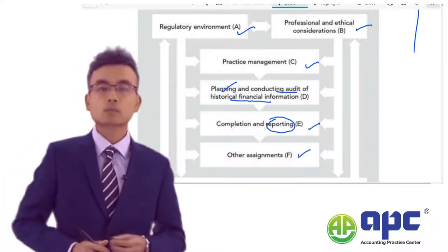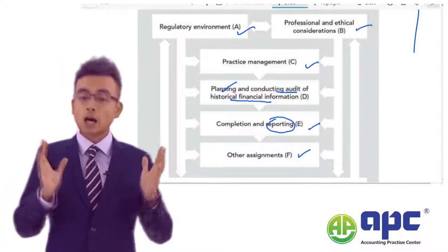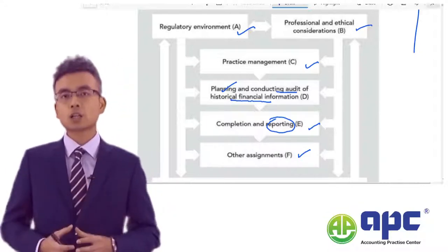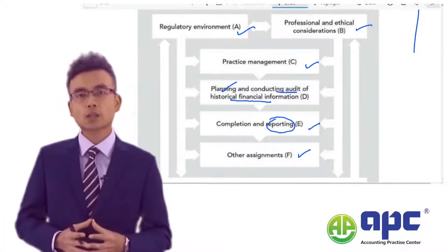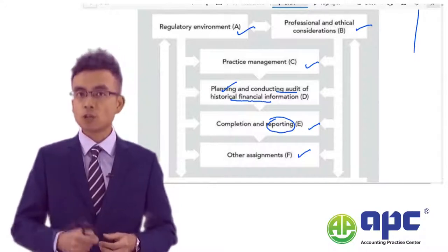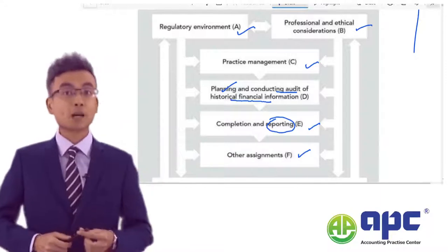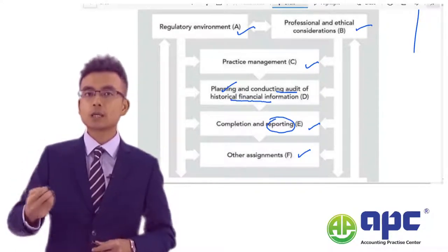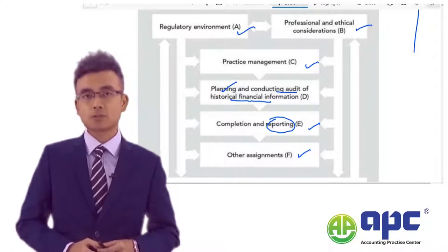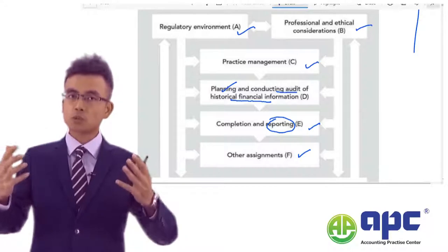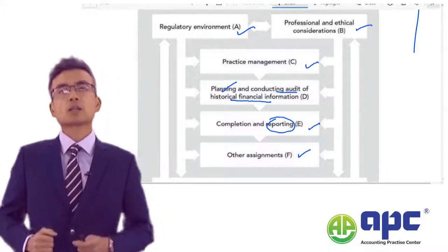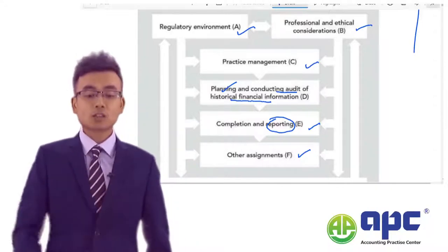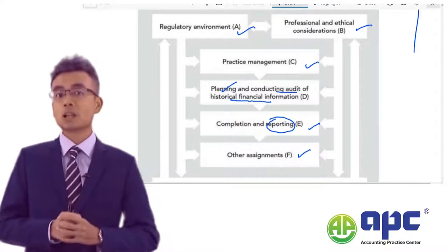Part F covers other assignments. At this level, we are not only providing audit work to clients. We may provide non-audit work — for example, reviewing a cash flows forecast provided by management because the management wishes to obtain finance from a bank. In that case, we may issue negative assurance, meaning we review the work to see whether anything has come to our attention suggesting the assignment is right or wrong.